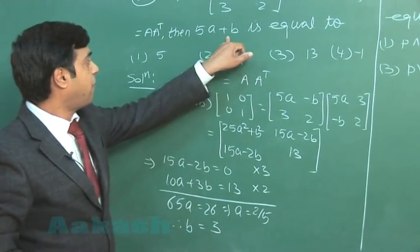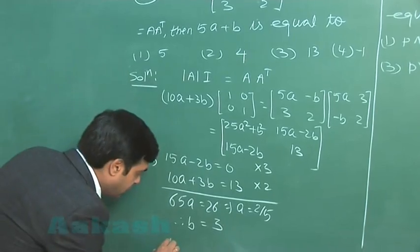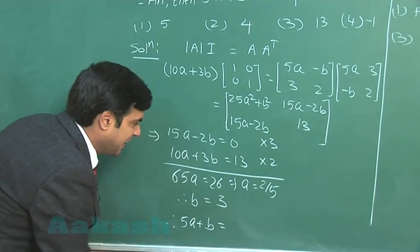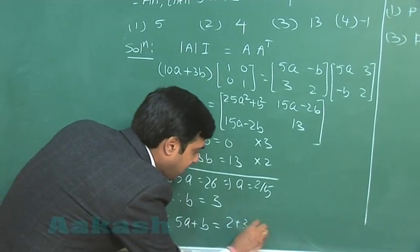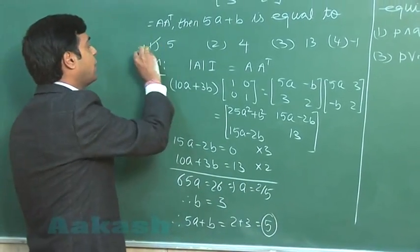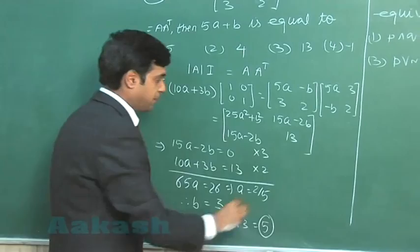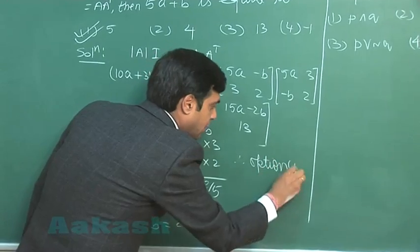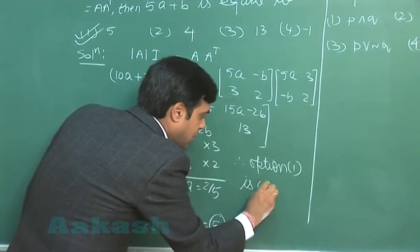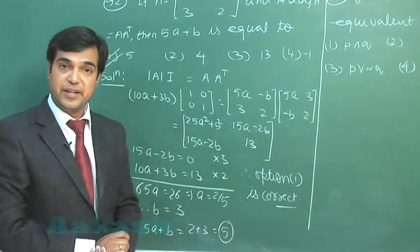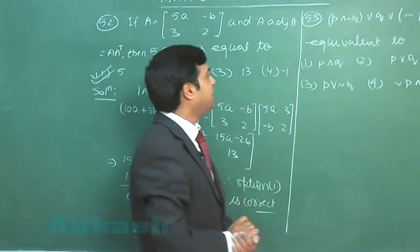Now we are looking for the value of 5a plus b. Therefore 5a plus b equals 2 plus 3, that is 5. So we can see from the given options, option 1 is correct. Let us move to the next one.